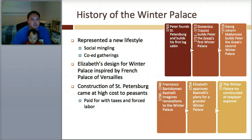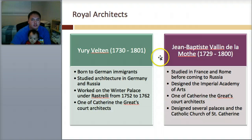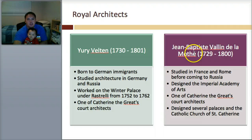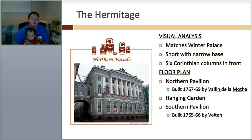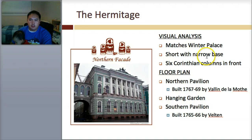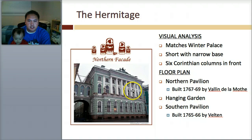The royal architects for this were Belton and De La Moth — again, Jean-Baptiste. Yuri Belton was born of German immigrants, studied in Germany and Russia, and was one of Catherine the Great's court architects. Jean-Baptiste, obviously, studied in France, and was also one of Catherine the Great's court architects — he designed several palaces. Then there's another place called the Hermitage. You have to know the northern facade. Visually it looks like the Winter Palace, and it has a short, narrow base. It has six Corinthian columns in the front. The floor plan has a northern pavilion, a hanging garden, and a southern pavilion.